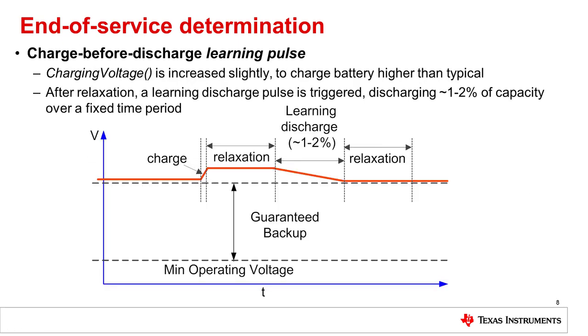The learning pulses used by the end-of-service determination algorithm can be triggered in two different ways: one is based on charge before discharge, and the other is discharge before charge.